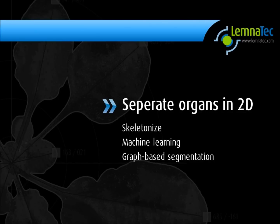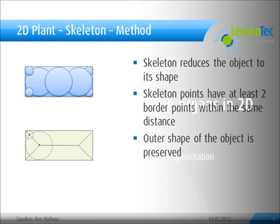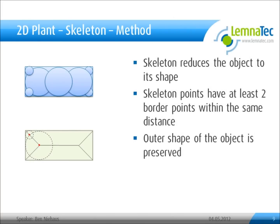In the next section, I will show you how to improve phenotyping using only 2D images without the necessity to create a 3D model. I will start with a skeleton. A skeleton point is defined as a point that has at least 2 border points within the same distance. In this way, the complexity of the object is fairly reduced while the shape of the object is preserved.